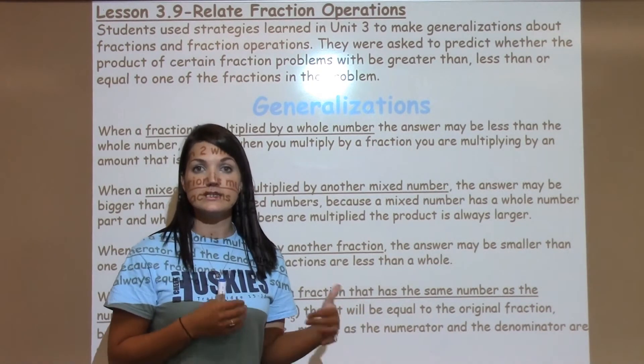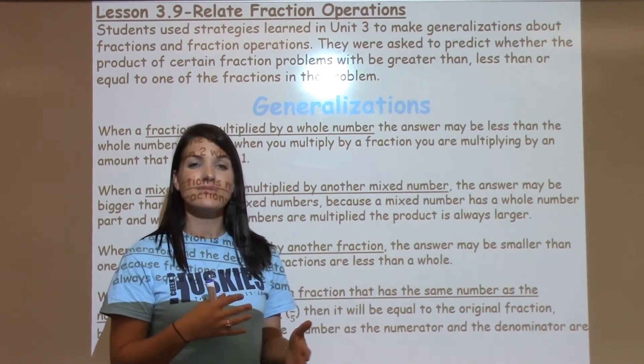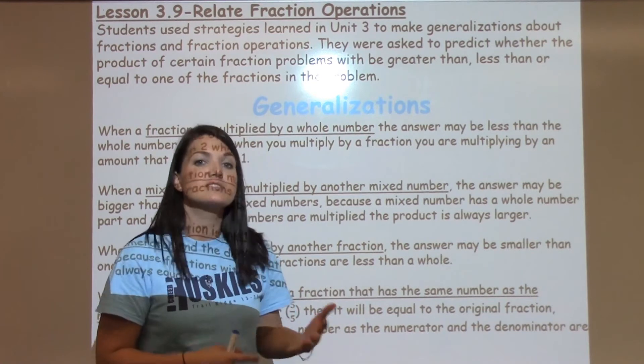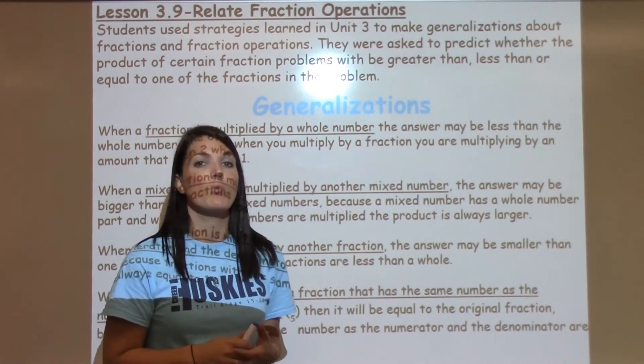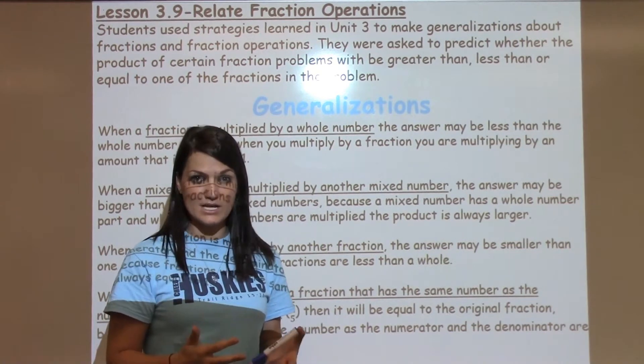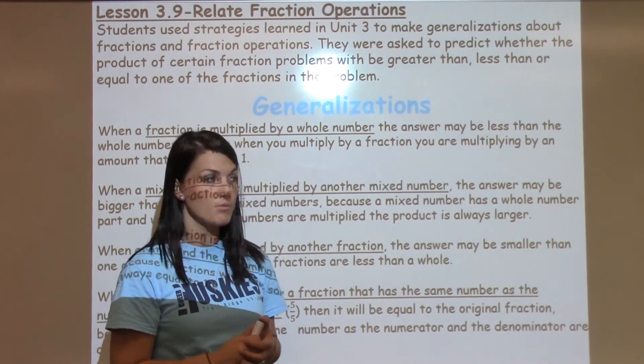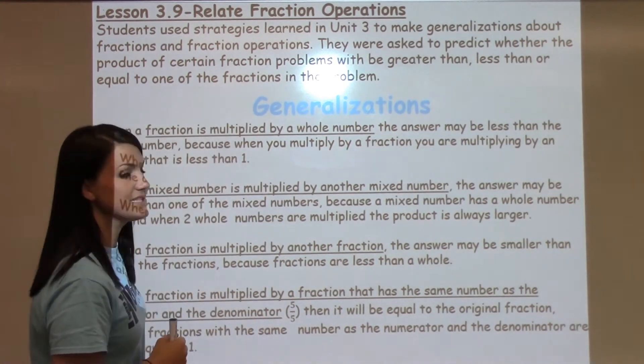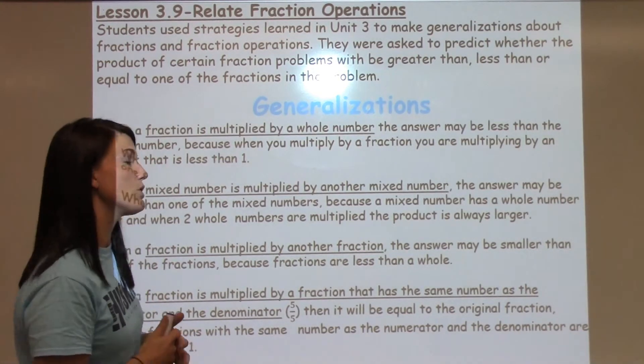When they take different fractions and multiply them together, not rules, but generalizations about what might happen to their answer, which would help them to decide if they got an answer that's close to what would be reasonable. So we're going to look at some of these generalizations and then I'm going to show you an example of one of them.